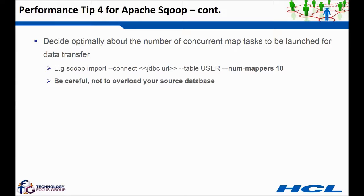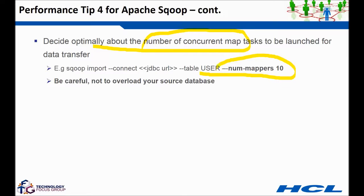Tip four — Sqoop internally launches MapReduce map jobs to pull data in parallel. By default, four map jobs are launched, but you can change this number using the num-mappers parameter. However, you must be careful: if you increase it to, say, 10, then 10 independent map jobs will connect to your database simultaneously. You must ensure you are not overloading the source database. If your source system is tuned to handle more concurrent queries, increasing mappers can definitely improve performance.